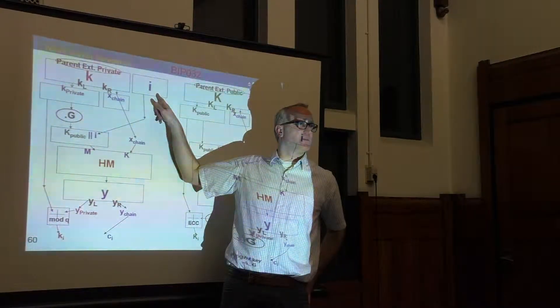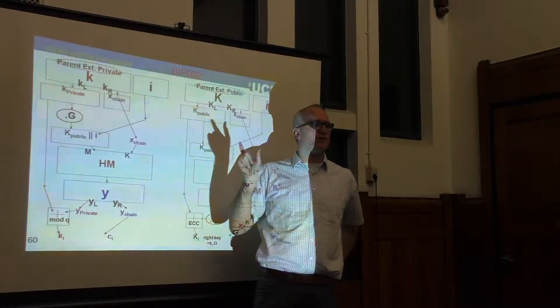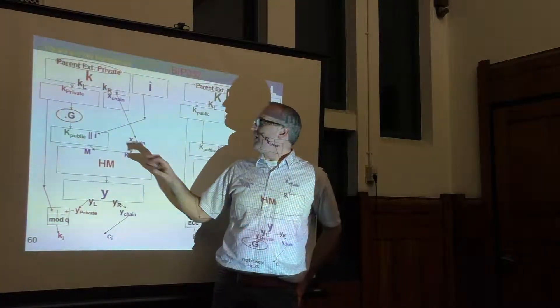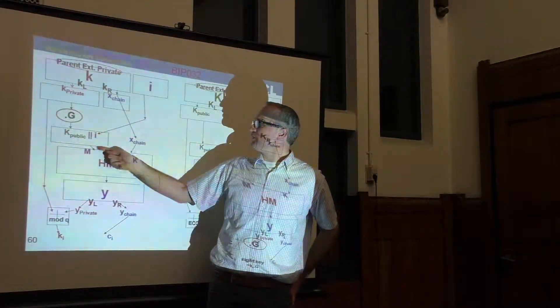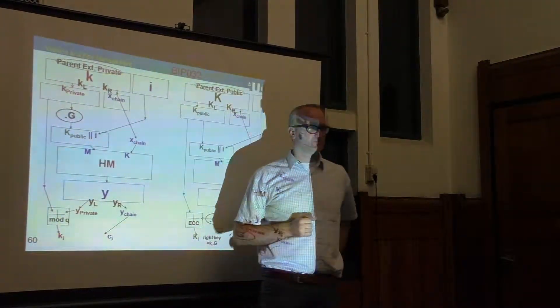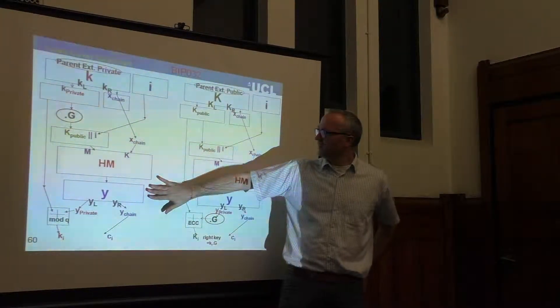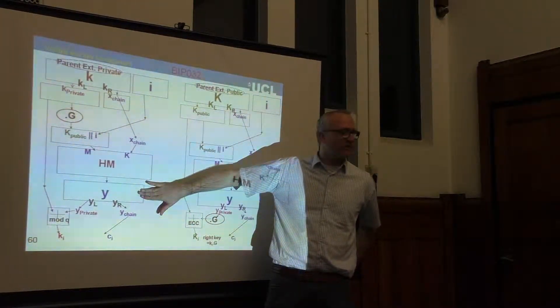Index i, which is on 31 bits actually, but represented on 32 bits, is fed as another input to this hash function. At the end you obtain an output of 512 bits.